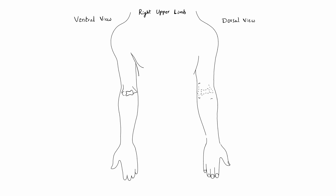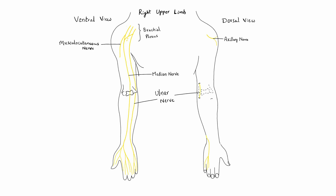The nerve supply to the upper limb is derived from the brachial plexus, formed by ventral rami of C5, C6, C7, C8, and T1 spinal nerves. The five main branches of the brachial plexus are the axillary nerve, the musculocutaneous nerve, the median nerve, the ulnar nerve, and the radial nerve. The axillary nerve supplies the deltoid and teres minor muscles. The musculocutaneous, median, and ulnar nerves supply the muscles of the anterior or flexor compartment of the arm and forearm. The radial nerve supplies the muscles of the posterior or extensor compartment. All intrinsic muscles of the hand are supplied by the ulnar nerve except the muscles of the thenar eminence and the first two lumbricals.